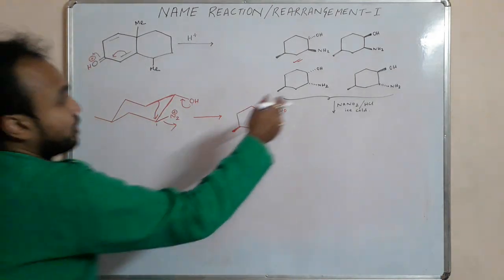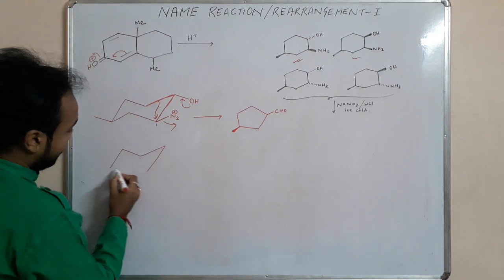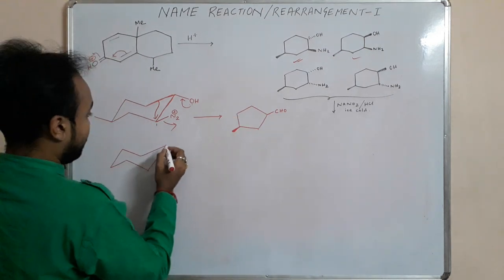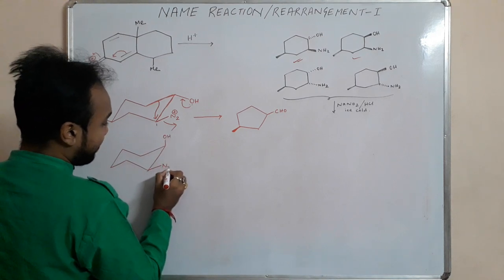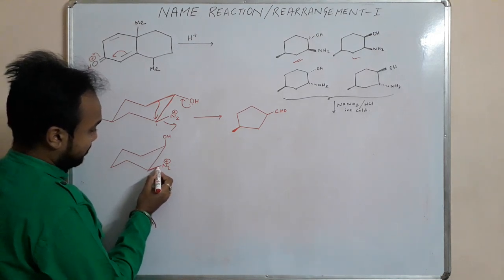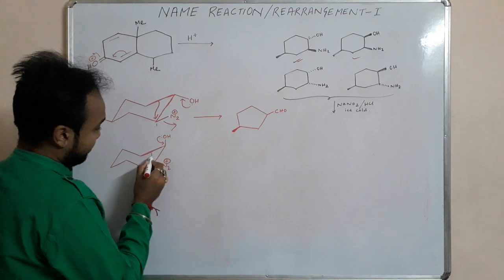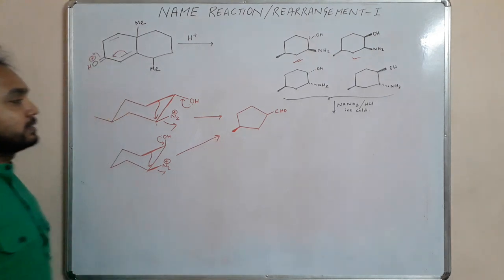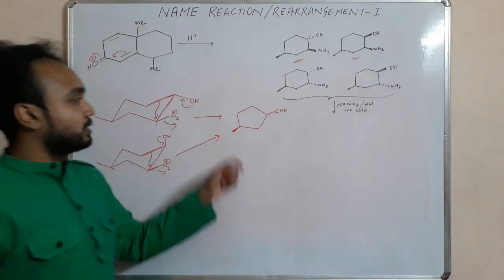For the second example: OH is above, and we directly write N2+ after diazotization. Now, which bond is anti-periplanar? The same CC bond is anti-periplanar. The anti-periplanar bond migrates and N2 leaves, again giving the same product — a 5-membered ring with an aldehyde and the methyl group.